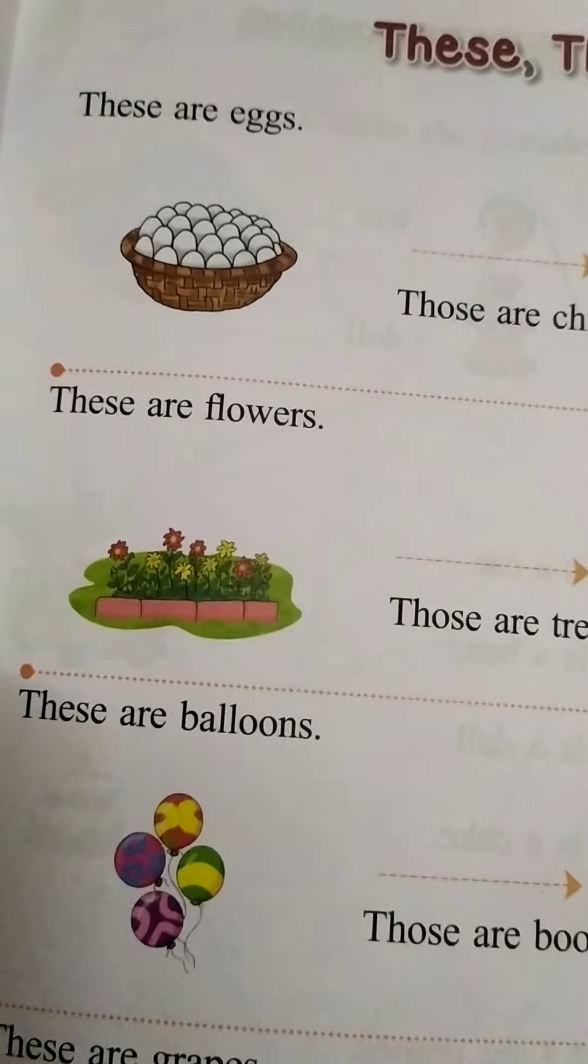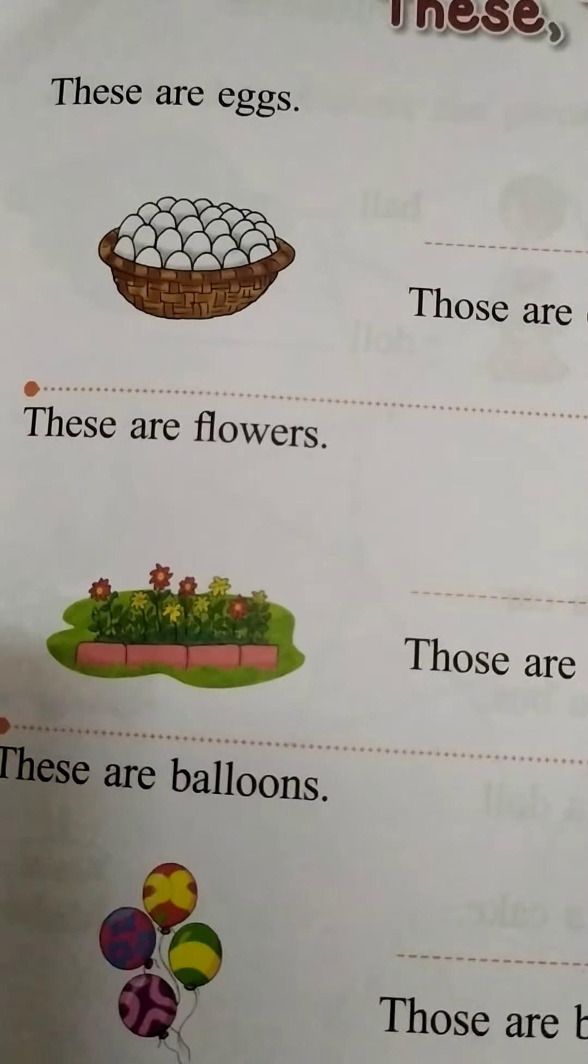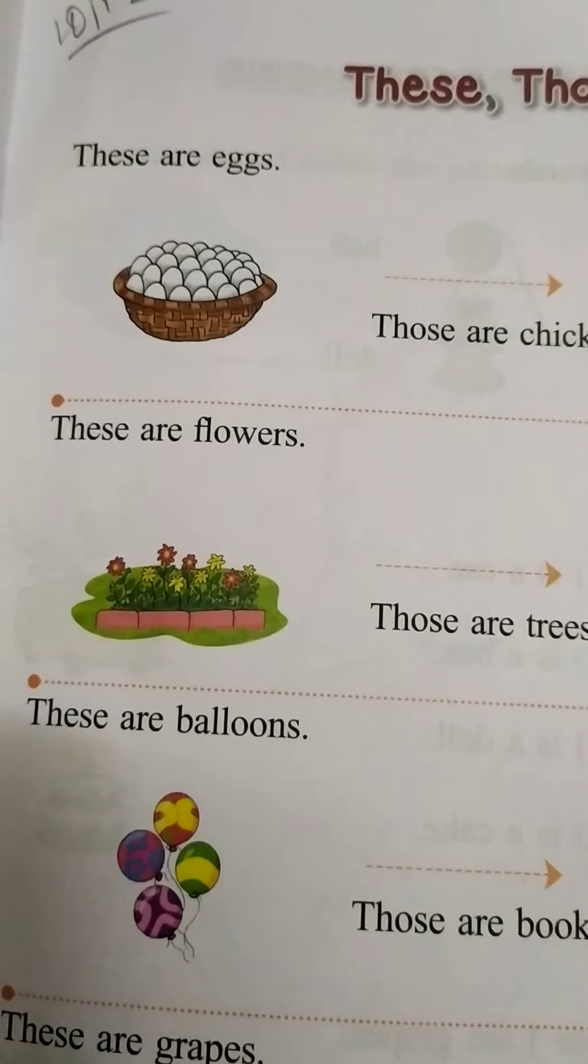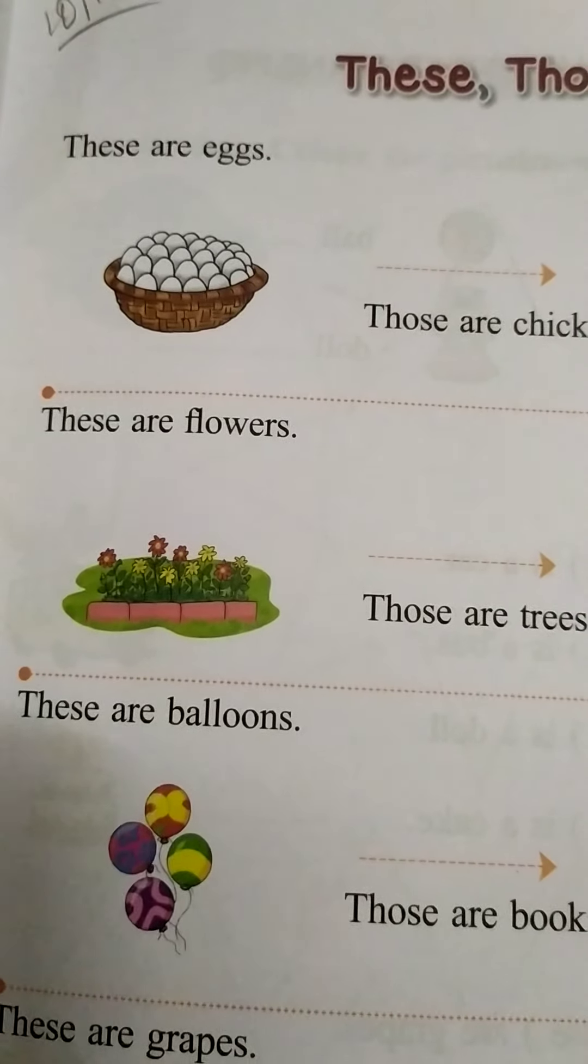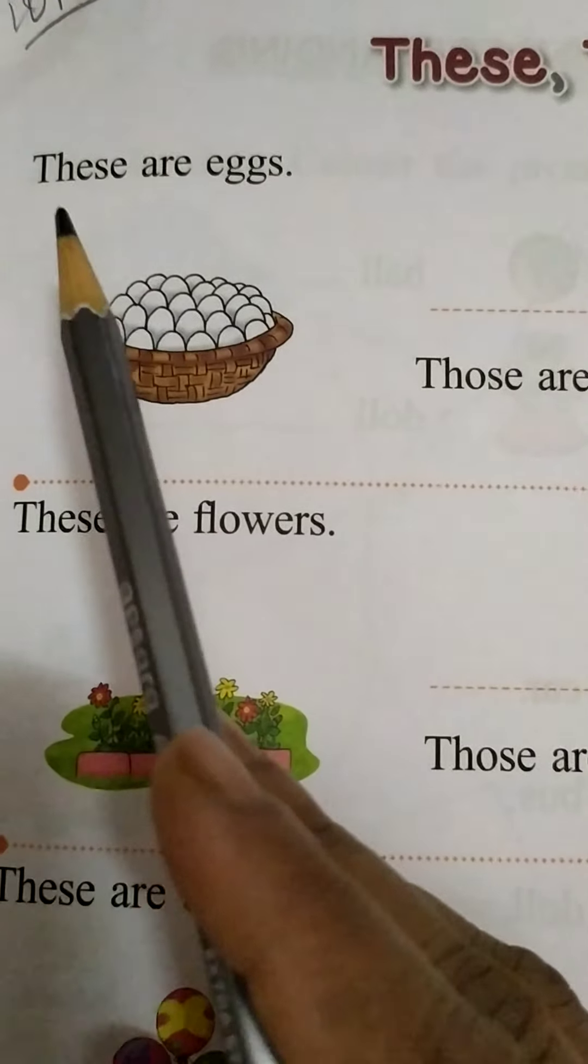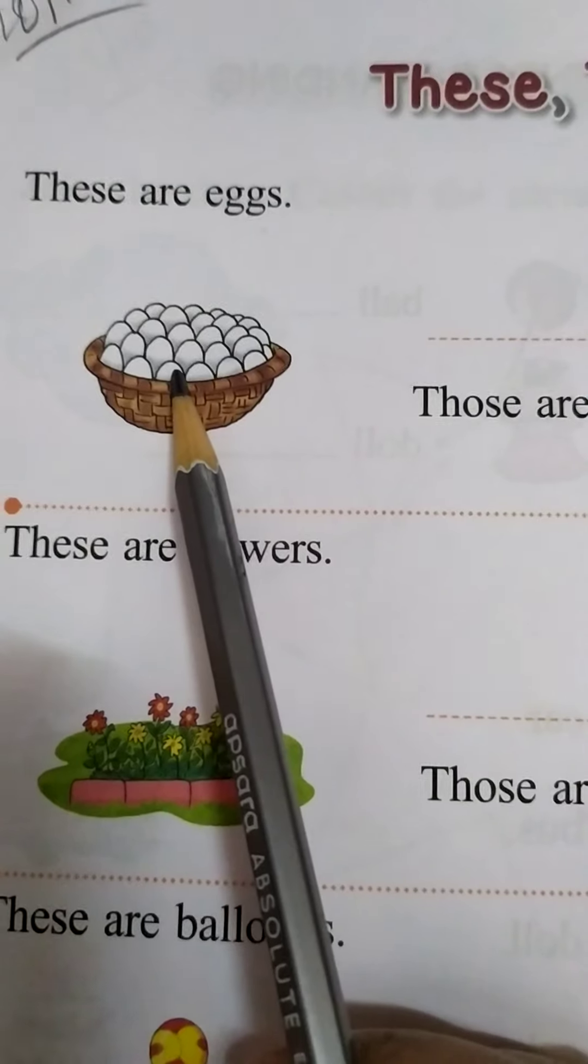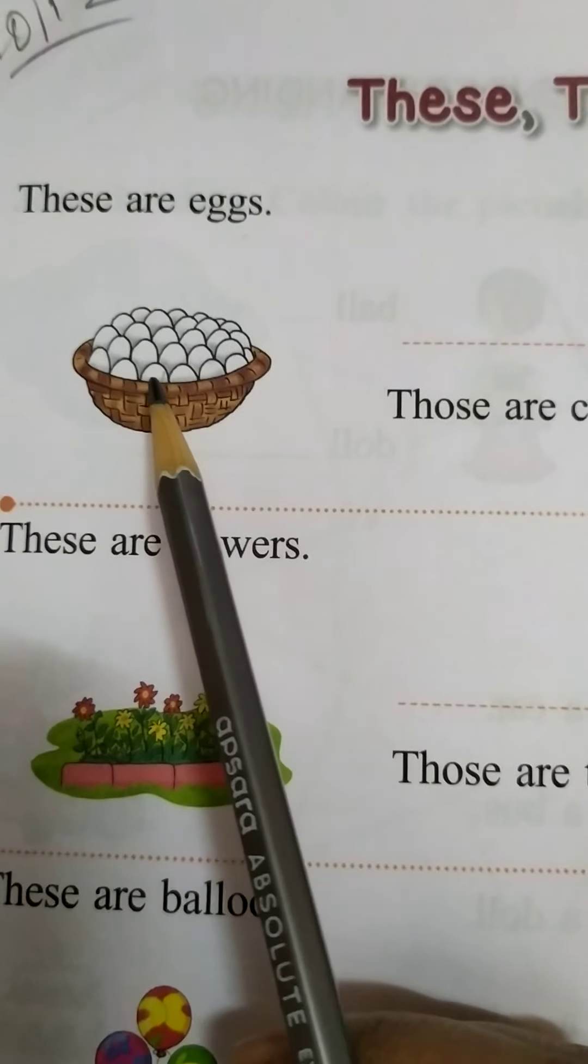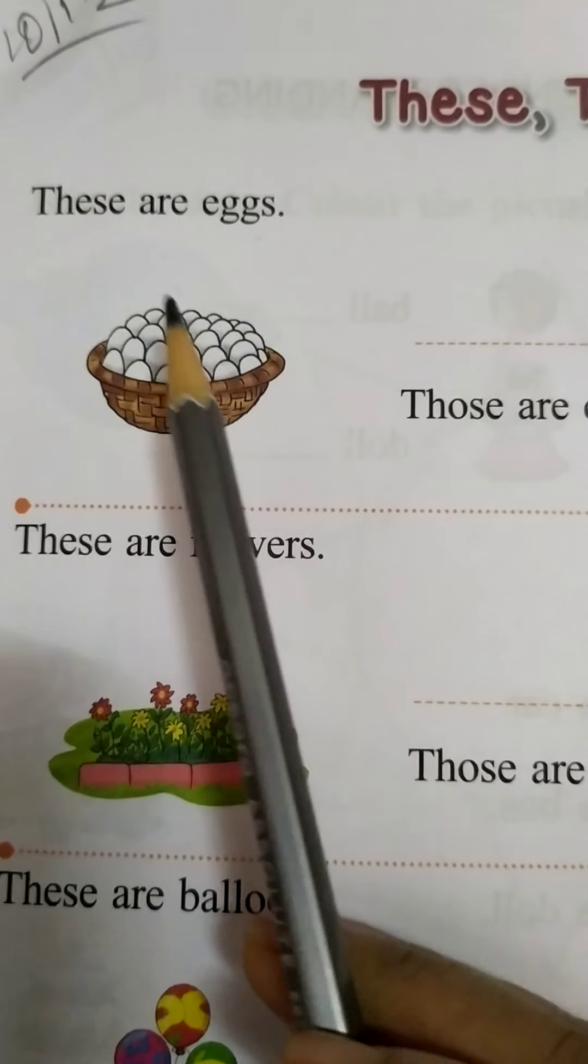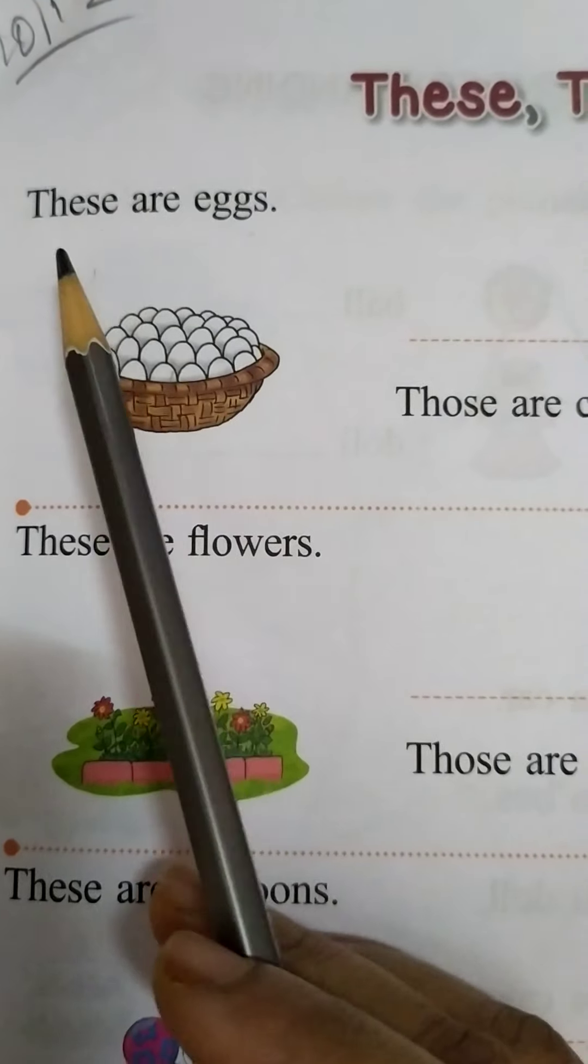Children, here basket of eggs are given. When things are near to us and more than one, we use these. See, these are eggs. Things which are near to us and more than one, we use these. T-H-E-S-E.